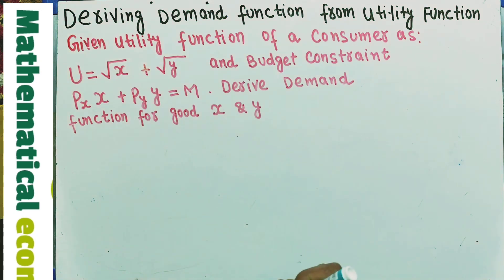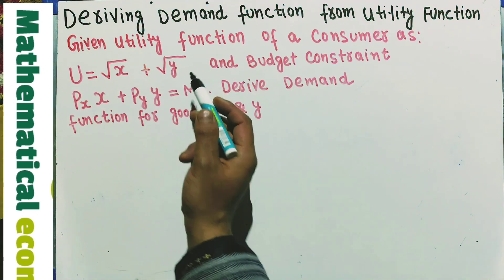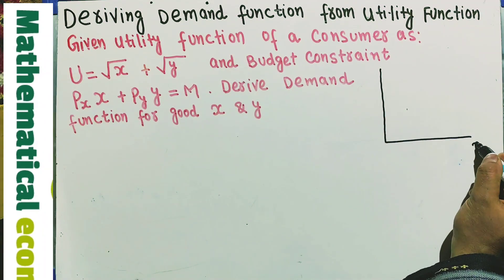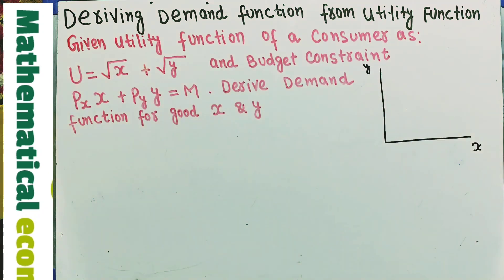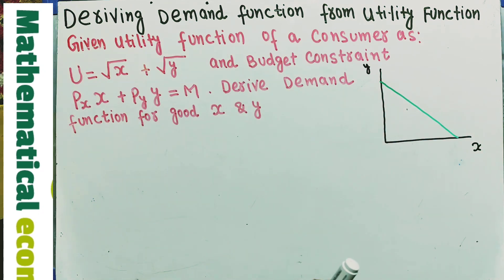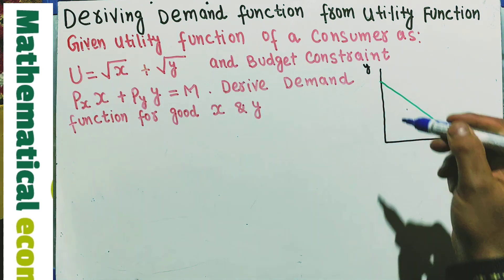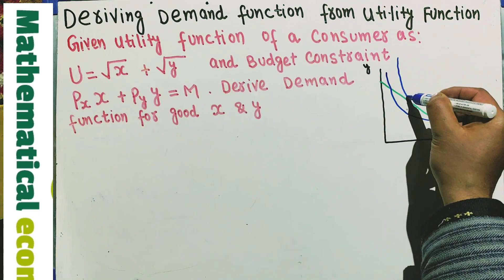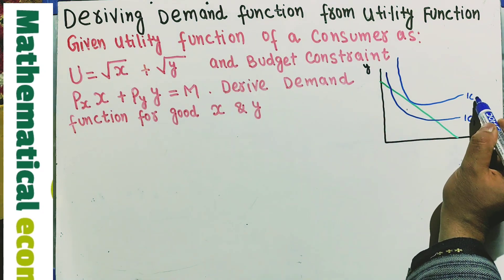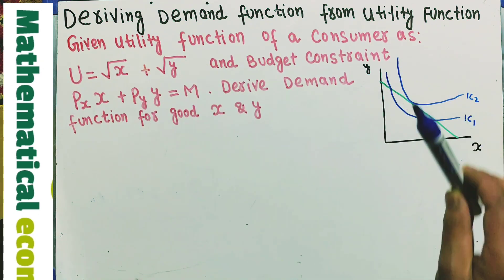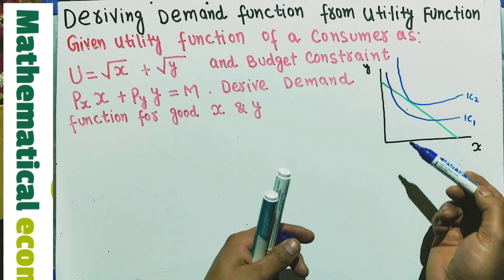Now let me draw the graph to make sense of this. We have good x on the horizontal axis and good y on the vertical axis. With this budget line drawn on the graph, given the budget, the consumer wants to reach the highest possible utility. So we have indifference curve one and indifference curve two — with the given budget, the consumer wants to reach the highest possible utility.